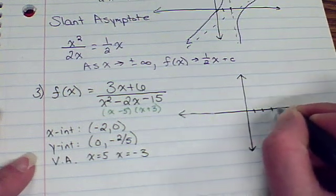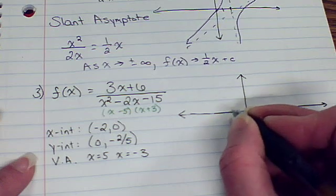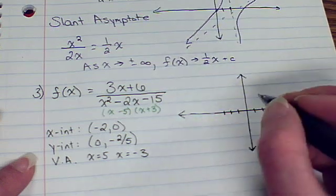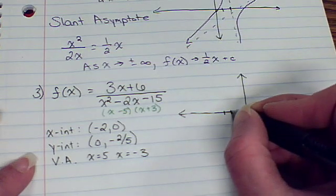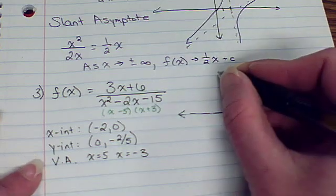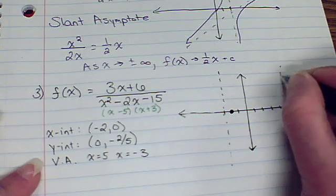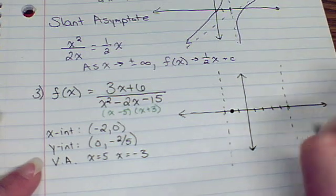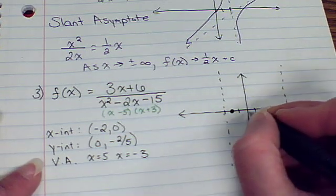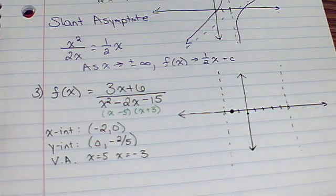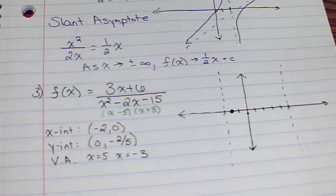1, 2, 3, 4, 5. 1, 2, 3. There's my x-intercept. Here is one of my vertical asymptotes. Here is the other one. And my y-intercept is about here. Okay. So we don't know what's going on with the rest of it. Let's look at the graph.